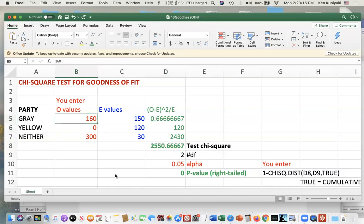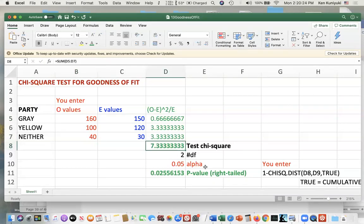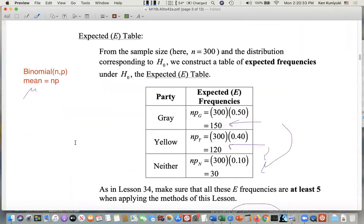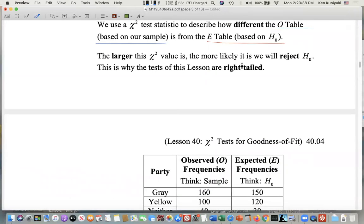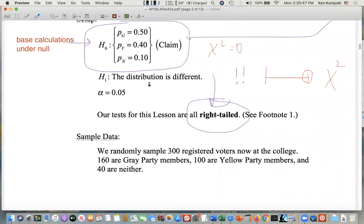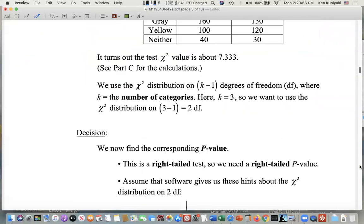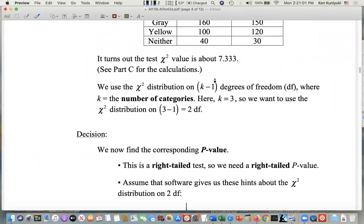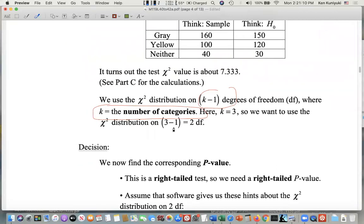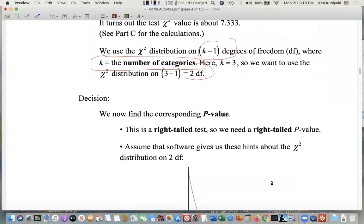Now, is this test chi-square value so big that we reject the null, or is it close enough to zero that the null is still safe? We have two degrees of freedom because the formula, right tail because we reject the null in favor of the alternative for a right tail test. How many degrees of freedom? It's not n minus one. It's not 299. It's k minus one, where k is the number of categories. There were three categories, Gray Party, Yellow Party, and Neither. So therefore, it's going to be three minus one or two degrees of freedom, not 299.